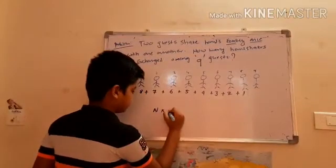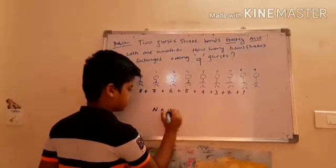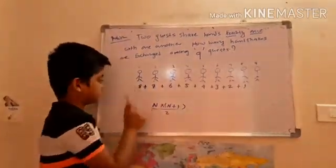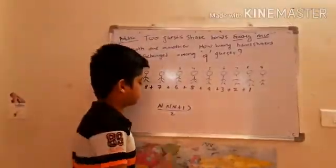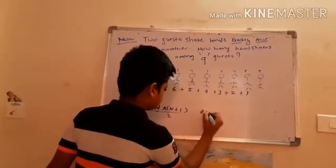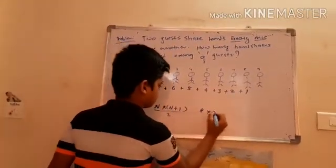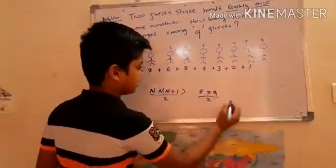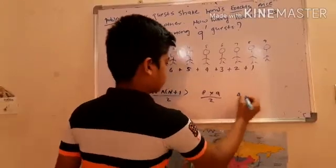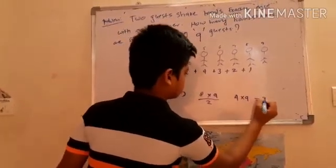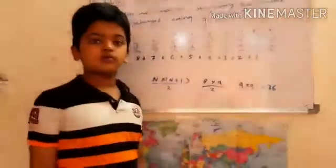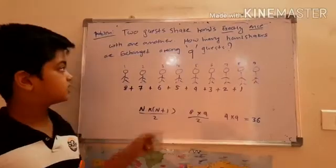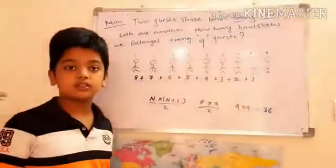N into N plus 1 by 2. Here the last digit is 8. The greatest digit is 8. So, 8 into 8 plus 1 which equals 9 by 2. 8 divided by 2 is 4. 4 into 9, which equals 36. So, 36 handshakes are exchanged among 9 guests.